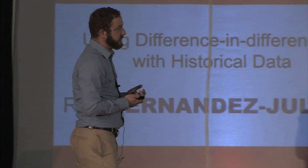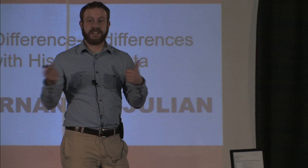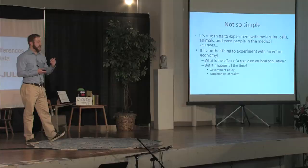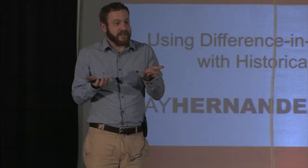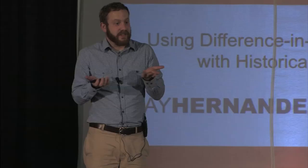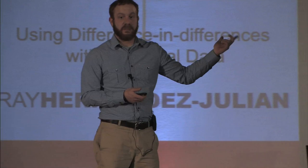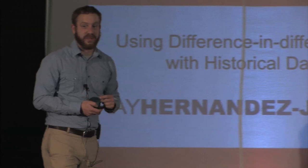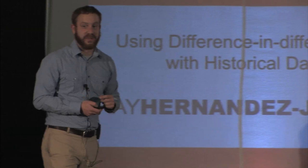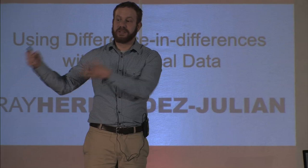The thing is, it happens all the time naturally. Government policies affect different states in different ways. For instance, the dropout age — the compulsory schooling age in Colorado — is 17, but it used to be 16. That's a change we can use. No one is choosing to stay in school differently; the law is forcing them to. We call this a natural experiment: reality somehow randomly assigning a treatment to one group and not to another.